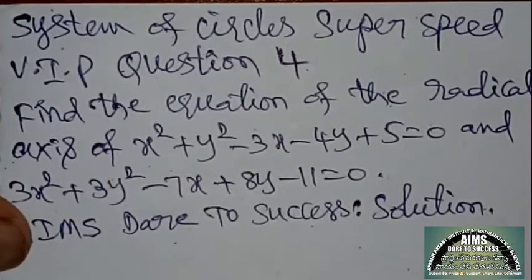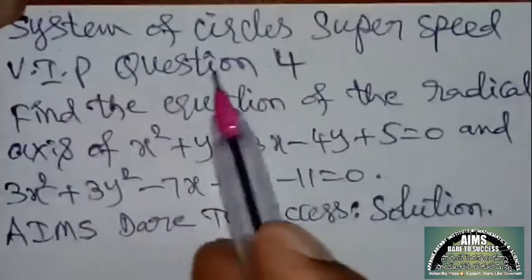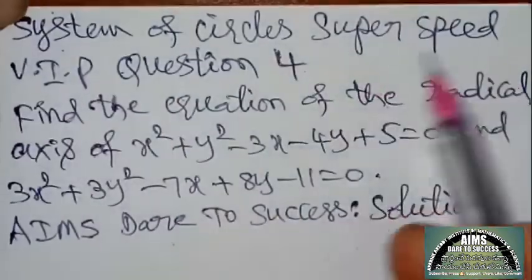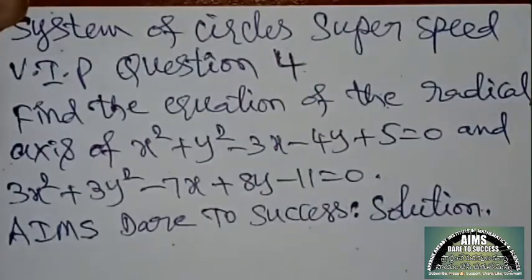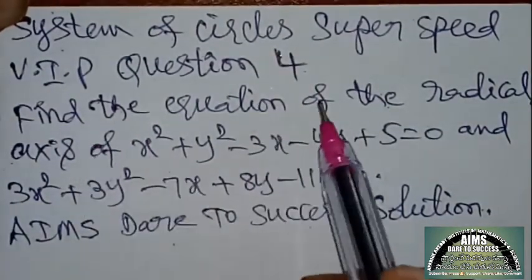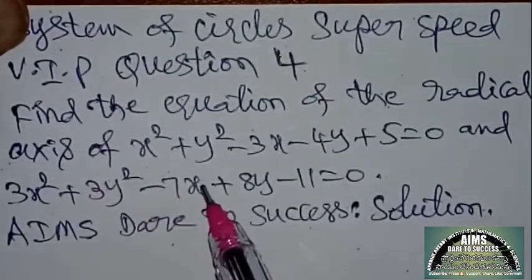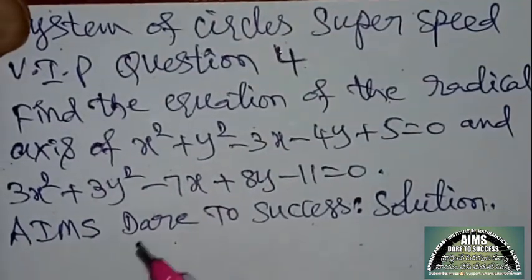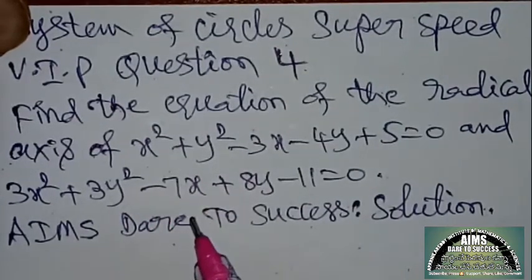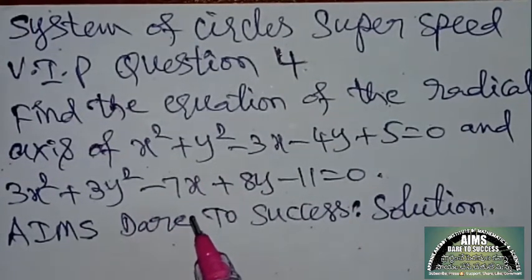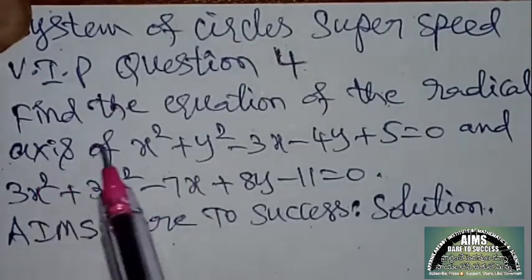Next, one more similar model question. System of circles, super speed VIP question number 4. VIP means very important previous question. Today, our interesting and highly demanded question from students — I will tell you this with easy concept logic with my magic answer, especially made for you.